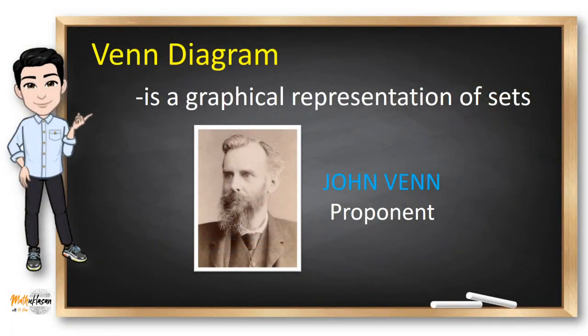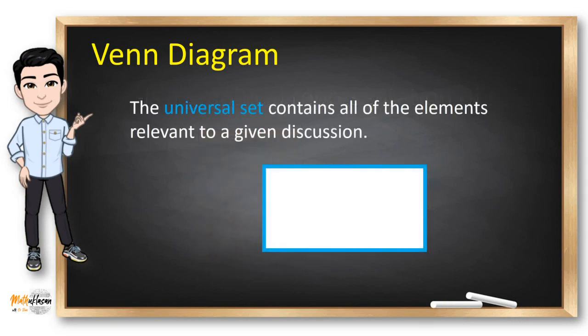Do you know that sets can be represented graphically using Venn diagrams? It was named after the English mathematician John Venn who introduced their use in 1881. In Venn diagrams, the universal set U, which contains all the objects under consideration, is represented by a rectangle.